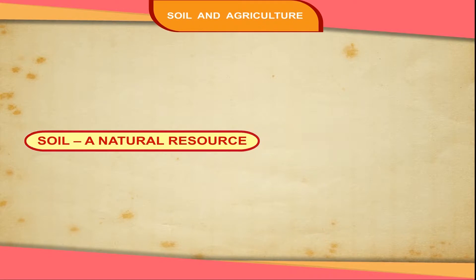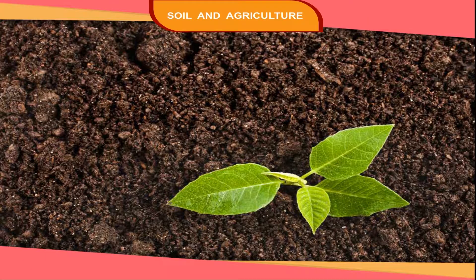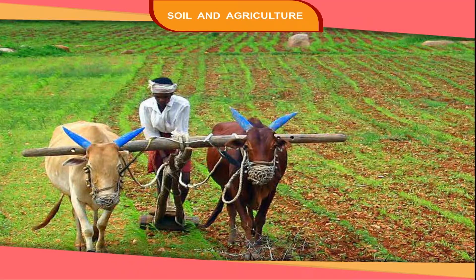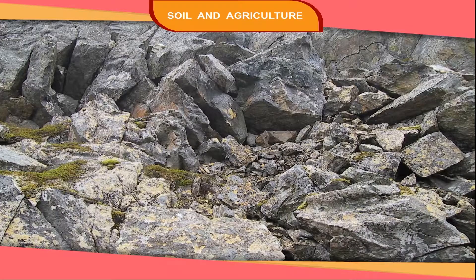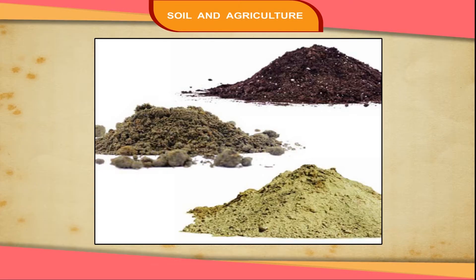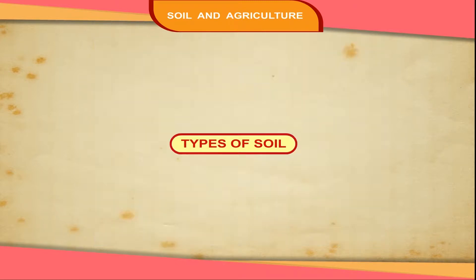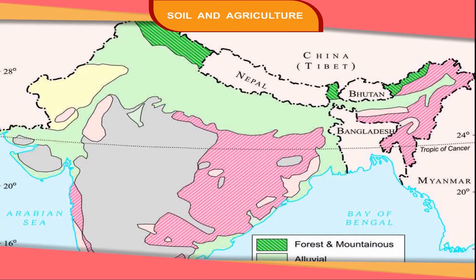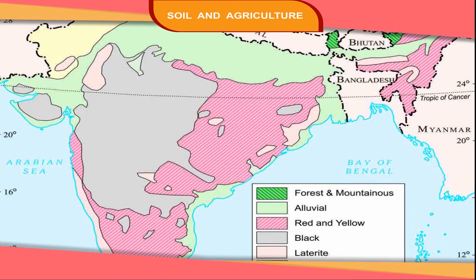Soil is the chief natural and important resource for agriculture. It is formed by the breaking up of rocks and is carried to different places by rivers and winds. The nature and types of soils vary from place to place. There are mainly six types of soil found in India.